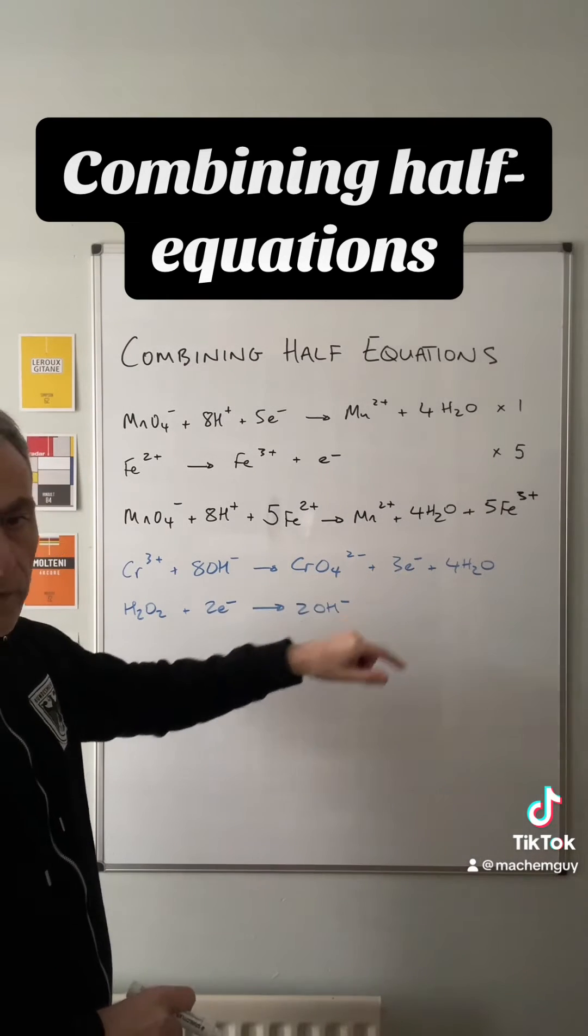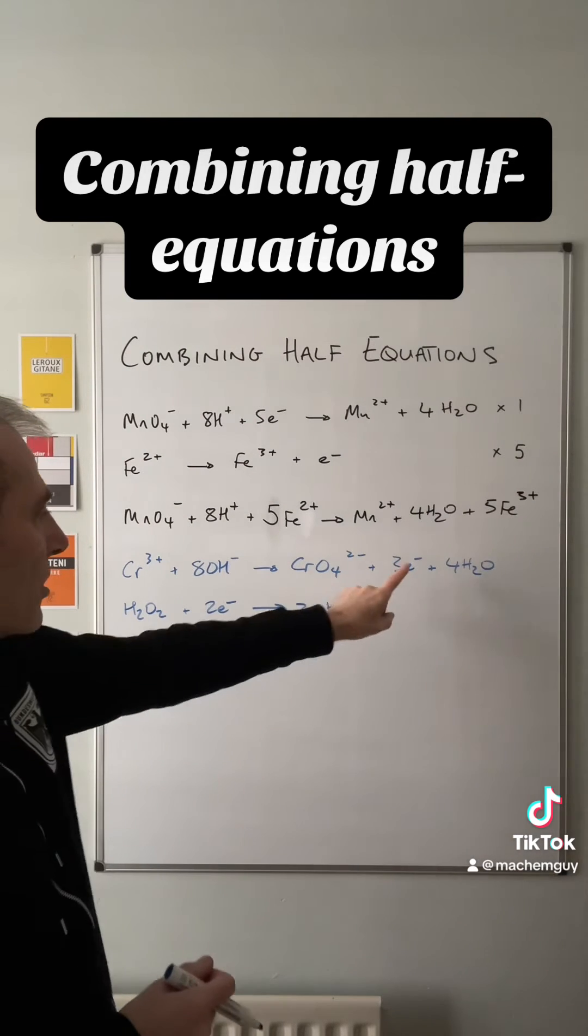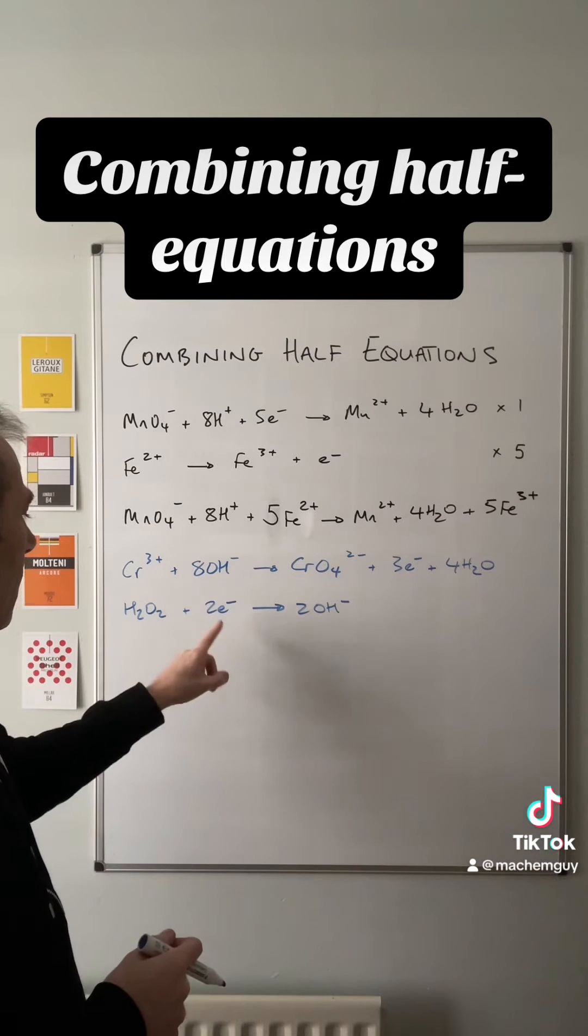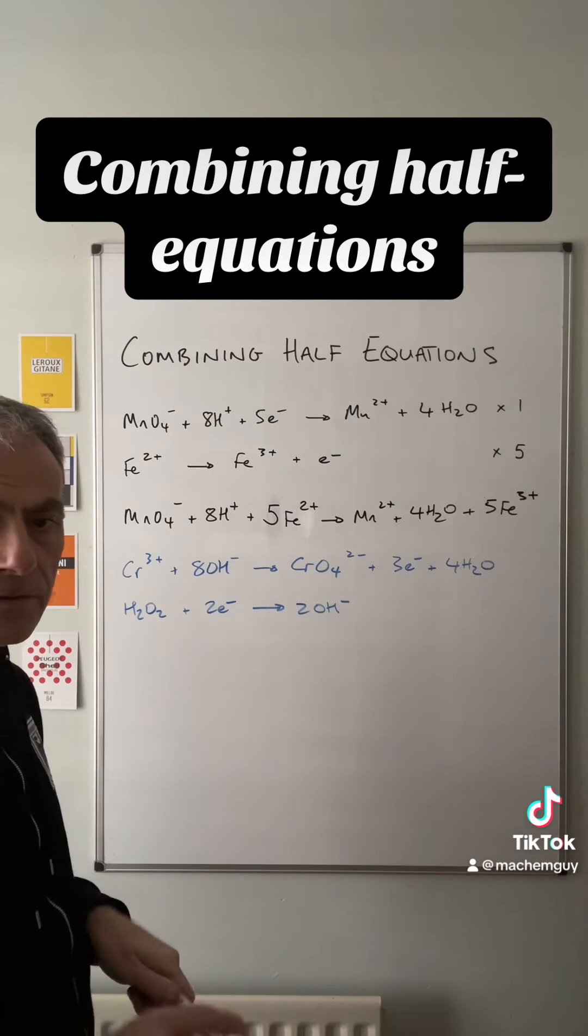So we're going to multiply both of these half equations out before we add them together. So the top one we're going to multiply by two to get the electrons up to six, and the bottom one we're going to multiply by three to get those up to six.